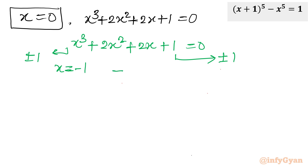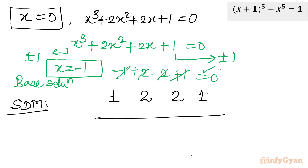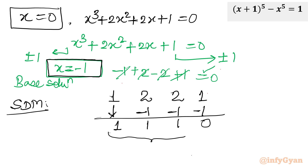Applying synthetic division with root x = −1 and coefficients 1, 2, 2, 1: bring down 1; −1×1 = −1, giving 2+(−1)=1; −1×1 = −1, giving 2+(−1)=1; −1×1 = −1, giving 1+(−1)=0. The resulting quadratic coefficients are 1, 1, 1, so the factored quadratic is x² + x + 1 = 0.